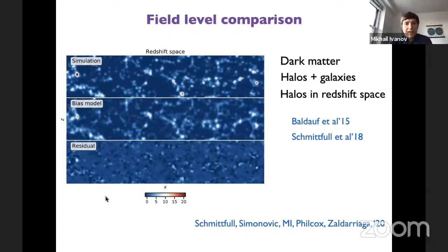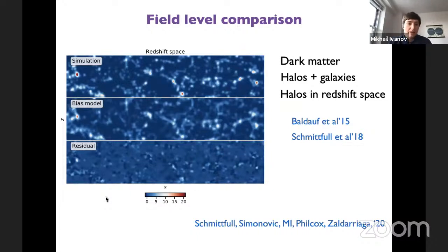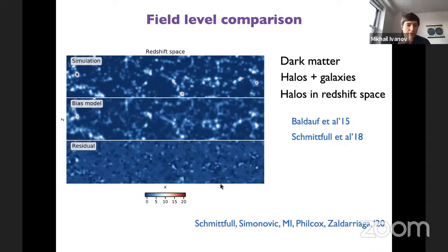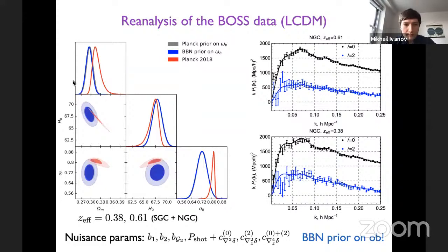Another test was a field-level comparison: we evaluate the EFT at the level of the N-body snapshot — taking the initial linear density snapshot and evolving it forward using perturbation theory, then comparing to N-body. On large scales the agreement is very good, meaning we capture not just the power spectrum but all other correlation functions as well.